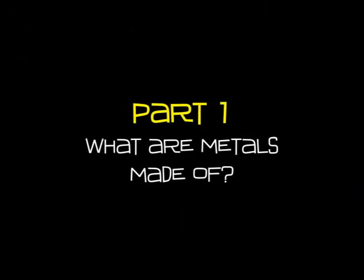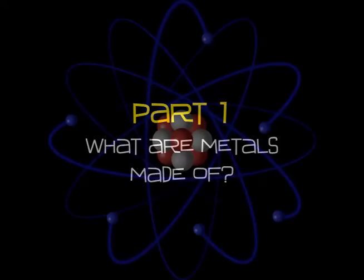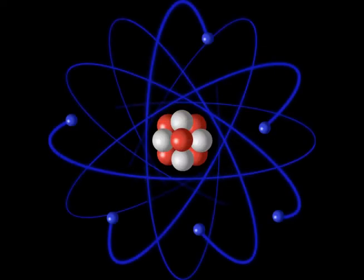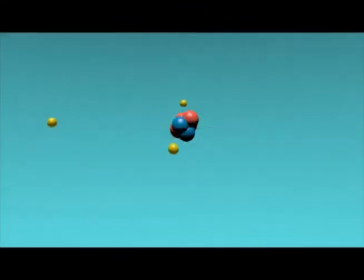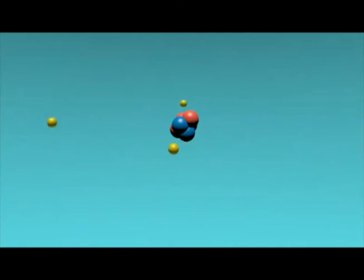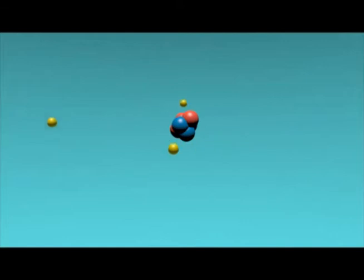What are metals made of? Metals, like all materials, are made out of tiny particles called atoms. An atom has a central nucleus and around the nucleus in orbit are electrons. And those electrons carry negative electric charge.